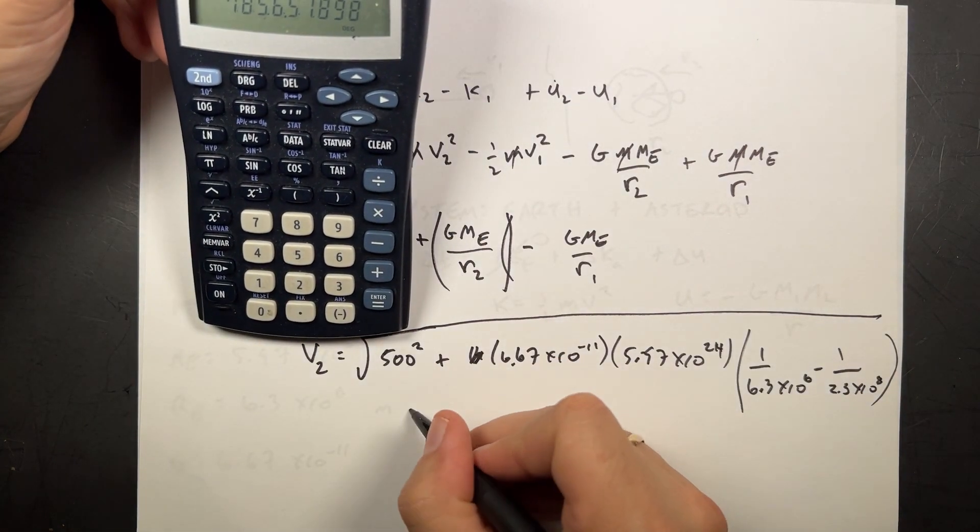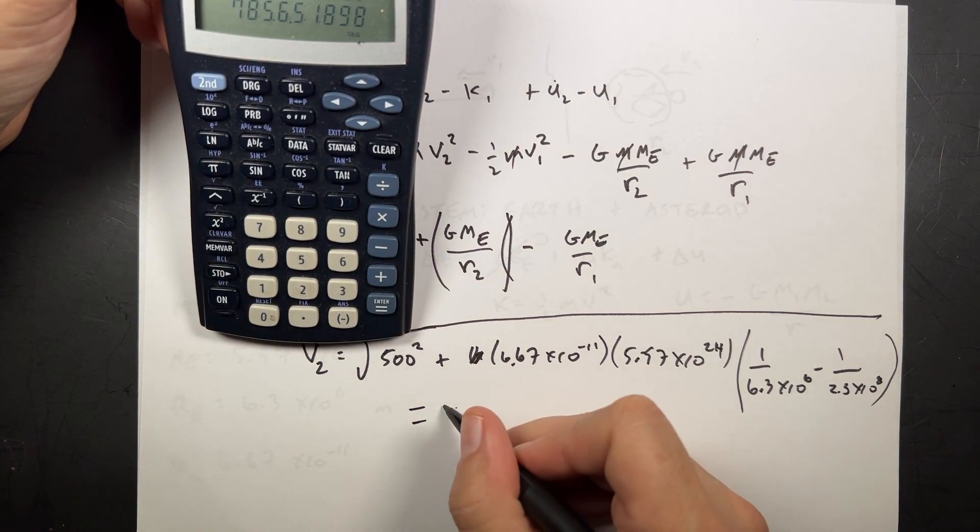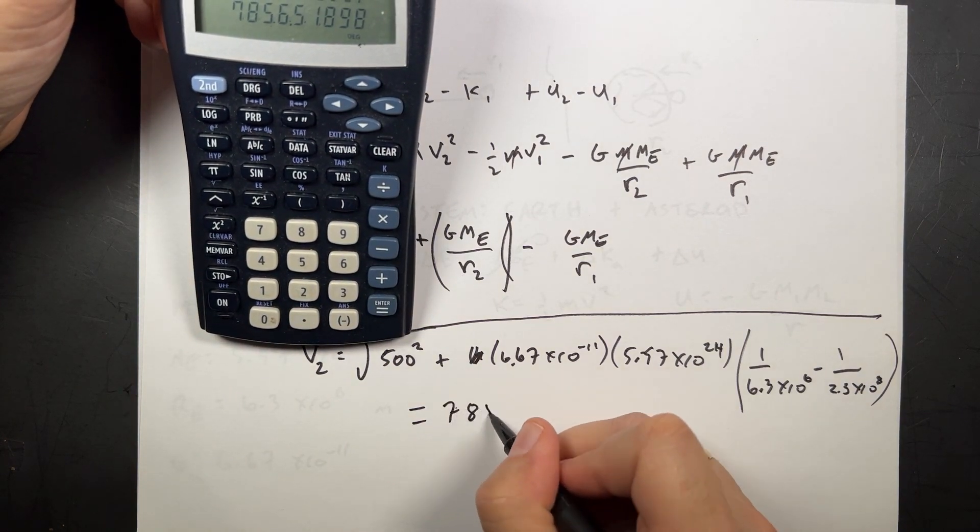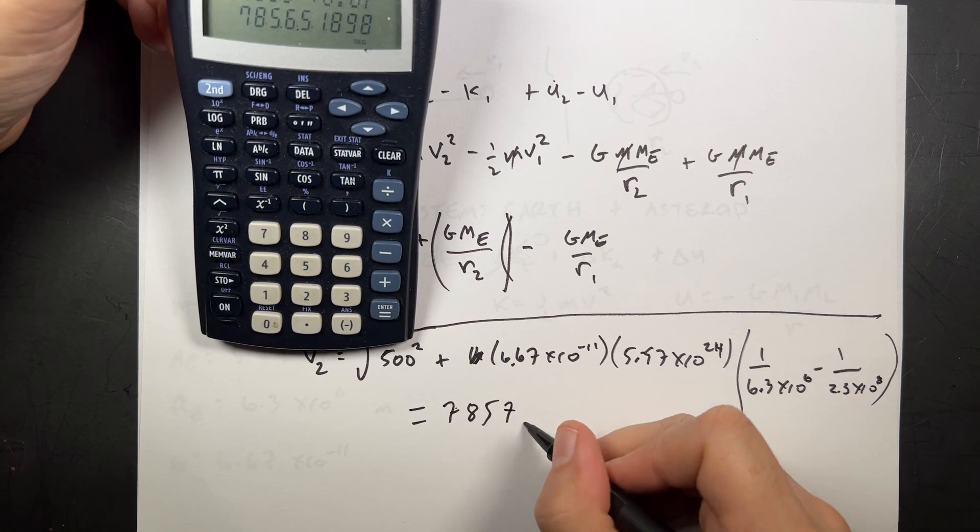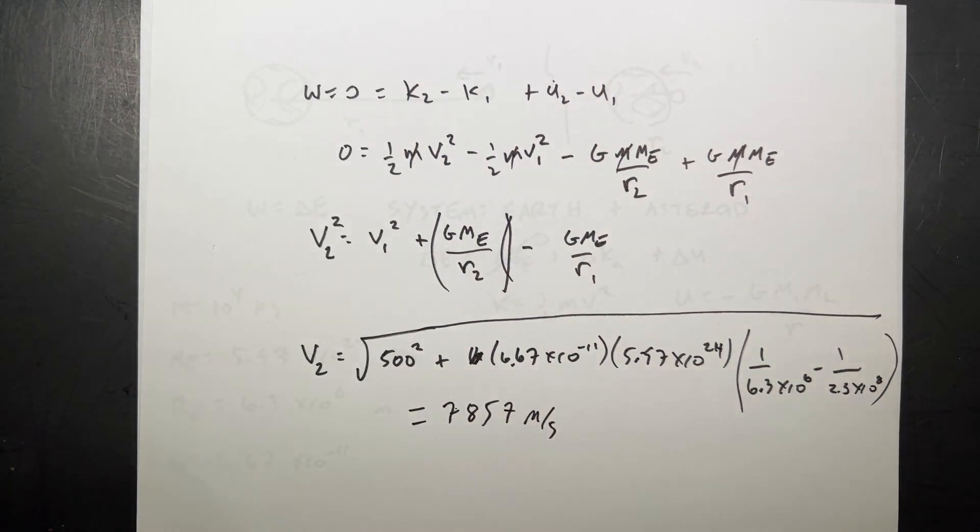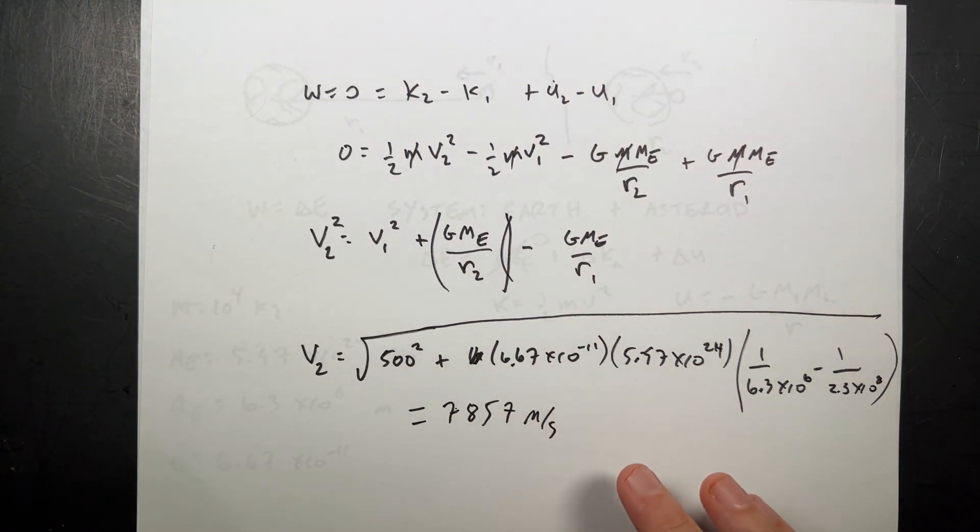Okay. So I get v2 is 7,857 meters per second. Which is really fast. And you do not want that asteroid to hit your planet. It will be bad. The end.